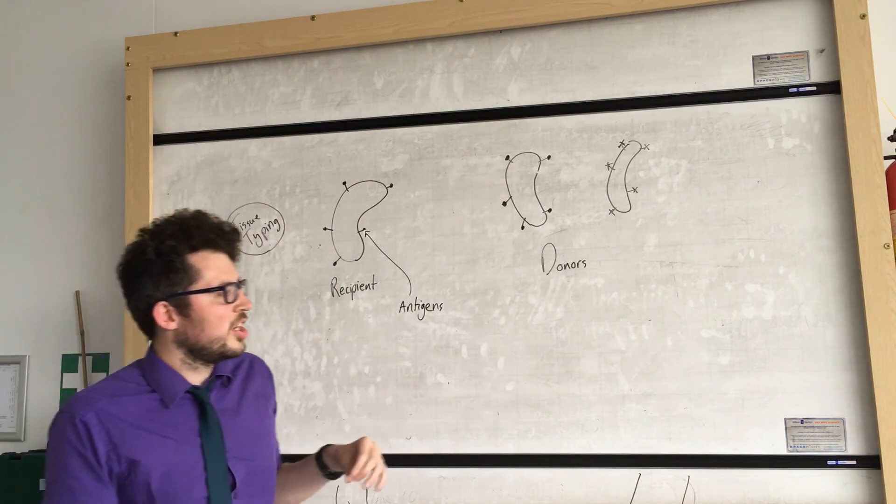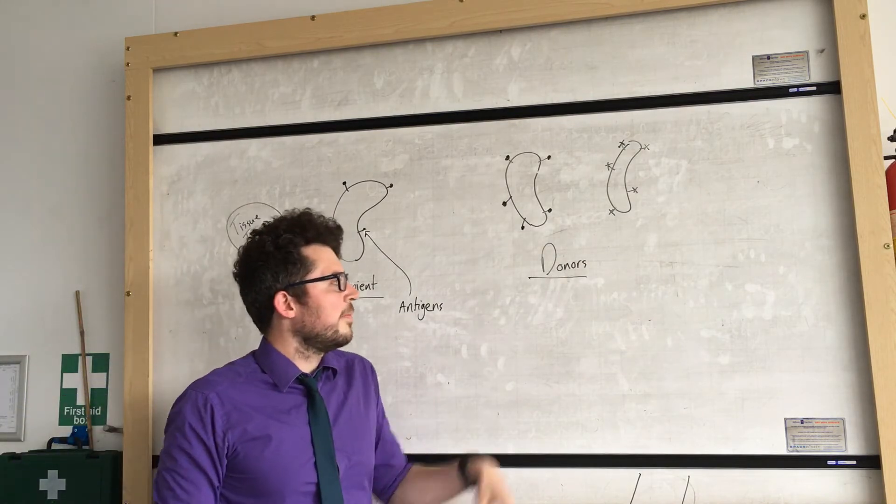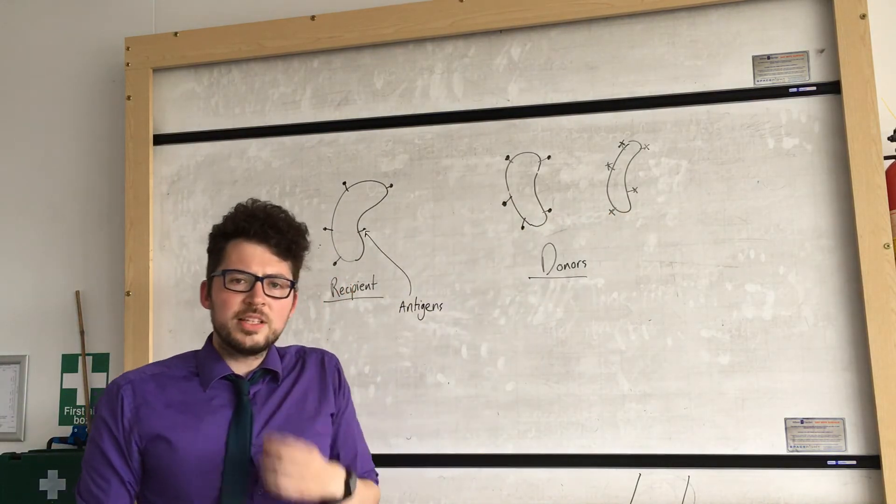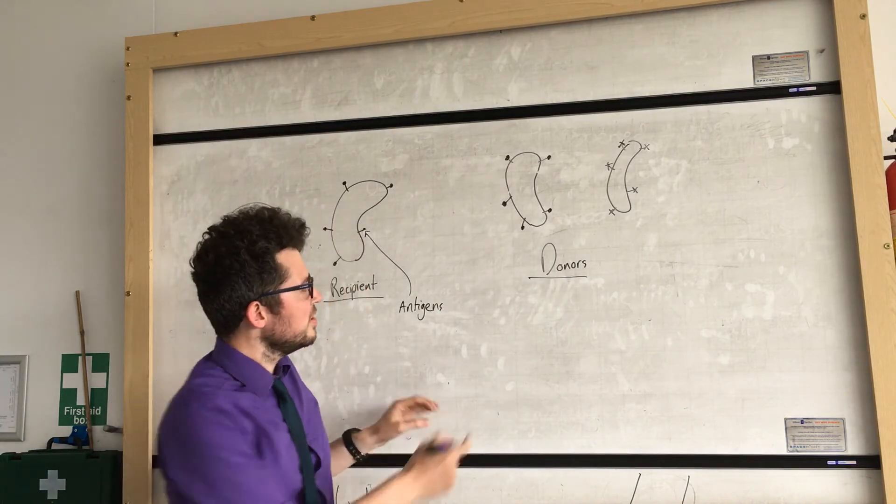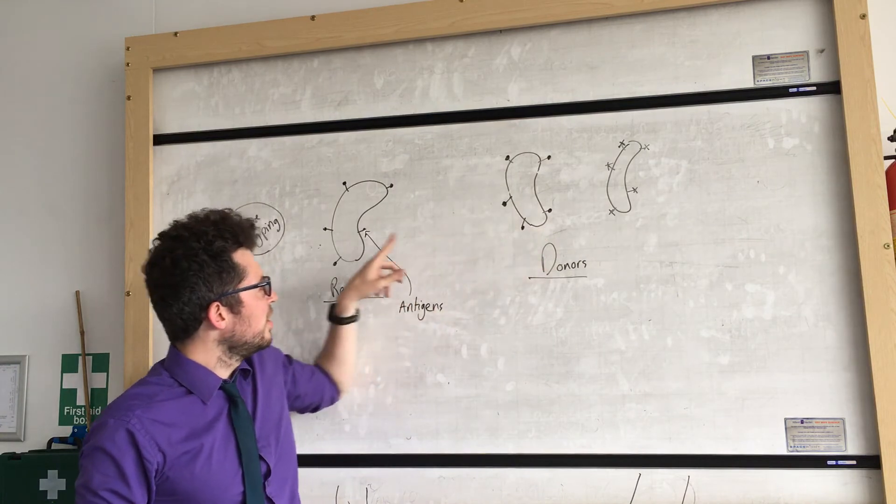This involves matching the donor to the recipient. So imagine we have two different donors here. This donor, donor 1 and donor 2. What we need to do is make sure the antigens are the same or as similar as possible from the donor to the recipient.